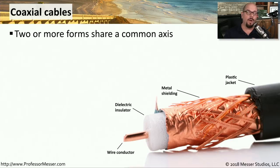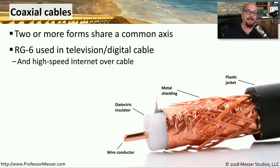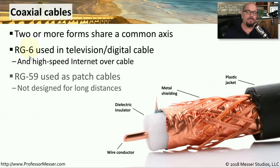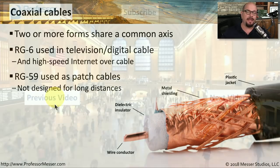Another type of cable you might find for wide area network, cable modem, and other uses is a coaxial cable. Coaxial means there are two or more forms that share a common axis — a wire conductor in the middle, surrounded by a dielectric insulator, then usually a metal shielding, all protected by a plastic jacket along the outside. If you're bringing in a digital cable modem connection, it's probably using RG6, the coax standard for that cabling. If you're then patching that cable connection to other devices, you're probably using RG59, which is really designed for patch cables and not for long-distance coax communication.